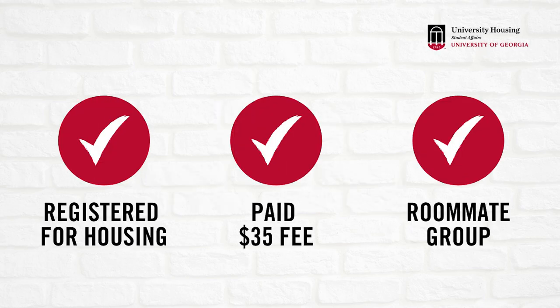This step takes place after a student has registered for on-campus housing at the University of Georgia, paid the non-refundable $35 registration fee, and created a roommate group, if they want the option to choose their roommate ahead of time.